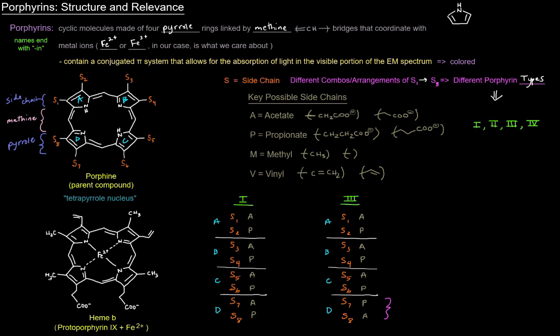Type III is only different at what's going on in the D ring. You still have that A, P, A, P, A, P alternation, but once you get to the D ring, this is where the A and P are switched. So it goes A, P, A, P, A, P, P, A — that little switch relative to type I.